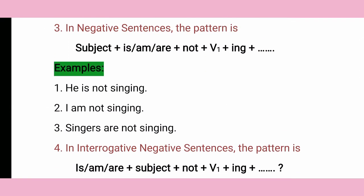Next are negative sentences. The pattern is: Subject + is/am/are + not + V1 + ing. In a continuous tense, we always use V1 plus ing. So our sentences would be: he is not singing, I am not singing, singers are not singing. This is all about our negative sentences.